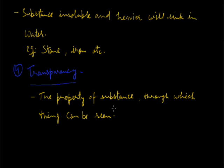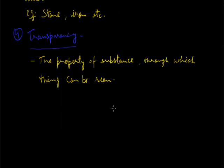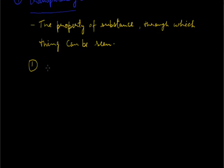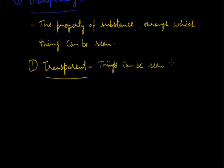On the basis of transparency, materials can be classified into following categories. Transparent material, the material through which things can be seen clearly. The example of transparent materials are glass, water, air, etc.